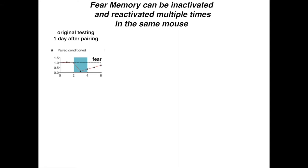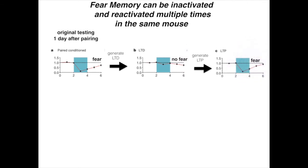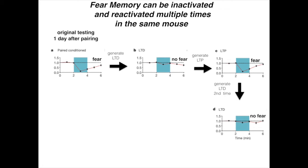This is the paired condition — the original testing one day after pairing that evoked fear. Then you generate LTD and there's no fear. Then you generate long-term potentiation and there is fear. Then you can generate long-term depression in the same mouse and there's no fear again. Then you can reactivate it by generating long-term potentiation a second time and evoke fear.